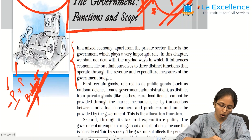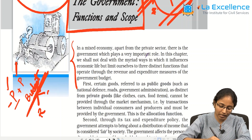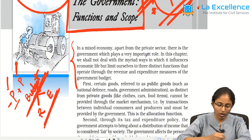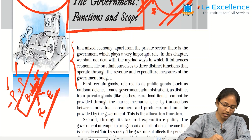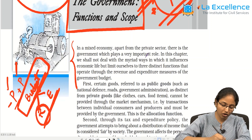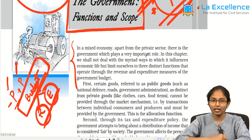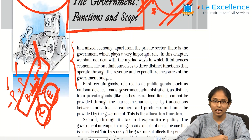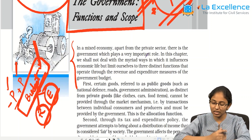Budget consists of the revenue that the government is getting and the expenditure that it makes for providing different services and welfare programs. So, budget is the cumulative account of government's revenue as well as expenditure. There are many functions of this instrument of budget — it is not simply an account of revenues and expenditure; it has more functions.